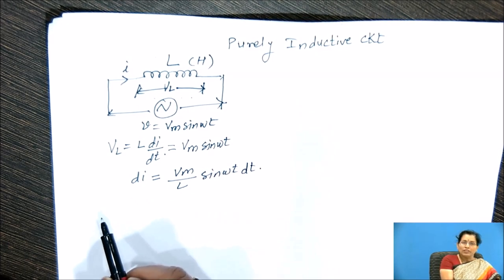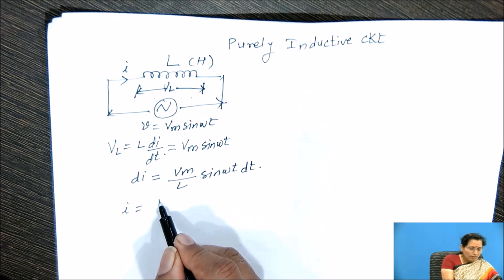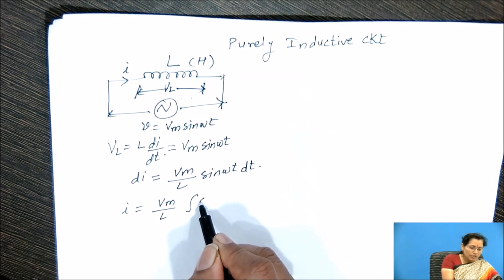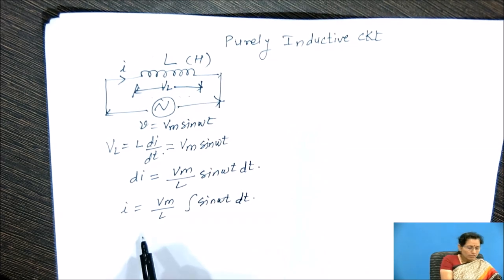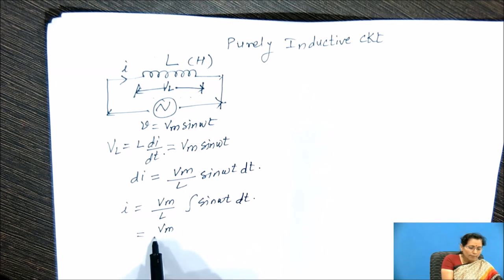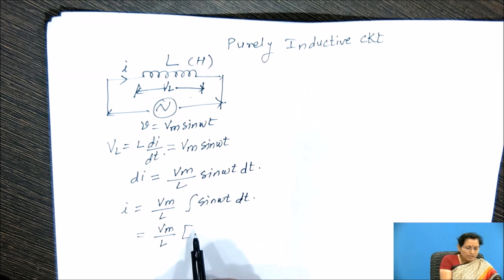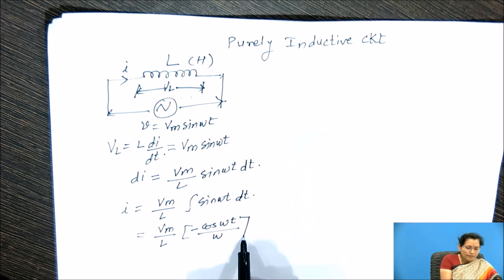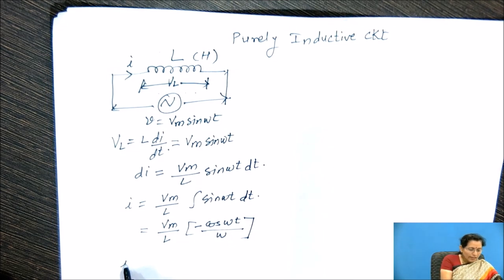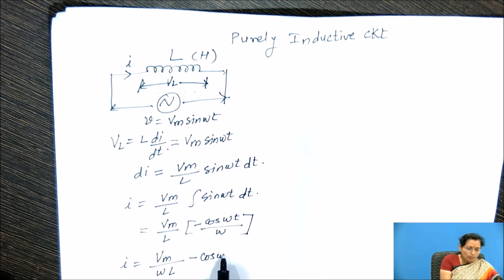Integrating on both sides we will get I equal to Vm/L integration of sin ωt dT. The integration of sin ωt is minus cos ωt divided by ω. So I equal to Vm/(ωL) minus cos ωt.